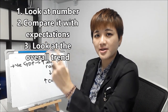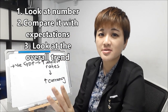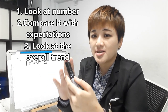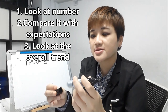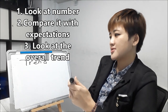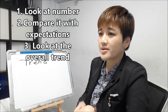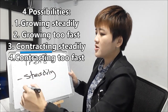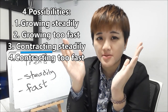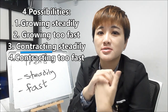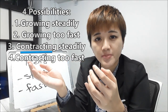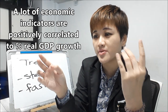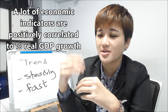So first, look at the number in itself. Second, compare it with market expectations. Third, you need to look at the overall trend, because you cannot just look at one month's data. If you learn statistics, a sample size of one month is just not representative — it can be distorted by seasonal factors and many other factors. So you need to look at the overall trend: is the economy in the big picture growing steadily or growing too fast? Is it contracting steadily or contracting too fast? It's very important to look at the long-term trend. A lot of economic indicators are positively correlated — for example, if you look at PPI seasonally adjusted numbers, in the long term there's a positive correlation between PPI seasonally adjusted and percentage real GDP growth.